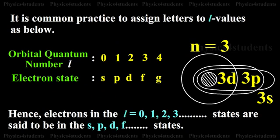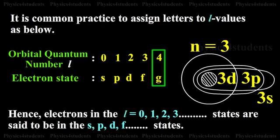It is a common practice to assign letters to l values. The orbital quantum number 0 corresponds to electron state s; orbital quantum number 1 corresponds to state p; orbital quantum number 2 corresponds to state d; orbital quantum number 3 corresponds to state f; and orbital quantum number 4 corresponds to state g. Hence, electrons in the l = 0, 1, 2, 3 and so on states are said to be in the S, P, D, F and so on states.